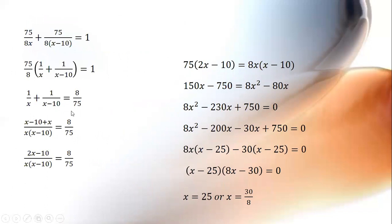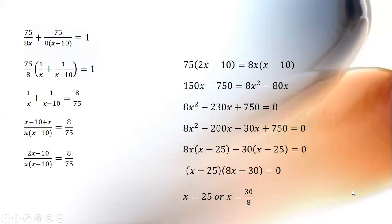Taking the LCM, we have (x minus 10 plus x) divided by x(x minus 10) equals 8 by 75, that is (2x minus 10) divided by x(x minus 10) equals 8 by 75. Cross multiplying and solving, we get 8x squared minus 230x plus 750 equals 0. Splitting the middle term as minus 200x and minus 30x, solving we get x equals 25 or x equals 30 by 8.